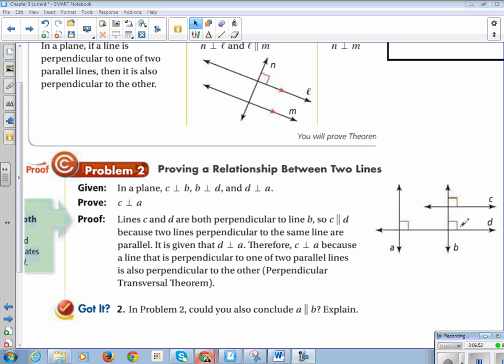We want to prove that C is perpendicular to A. And so we will put that as a yellow mark because we're proving it. So C is perpendicular to A. And we don't know that yet. We have to prove it. Line C and D are both perpendicular to line B. So C is perpendicular to D. And to show that lines are perpendicular, it's a little arrow mark. Because two lines perpendicular to the same line are parallel. It is given that D is perpendicular to A. Therefore, C is perpendicular to A. Because a line that is perpendicular to one of two parallel lines is also perpendicular to the other.